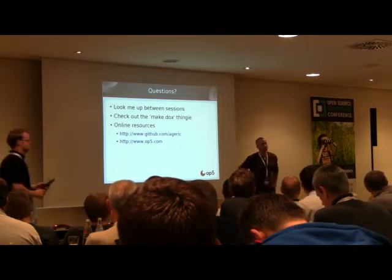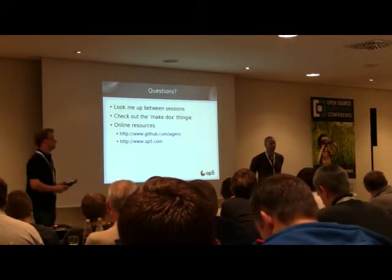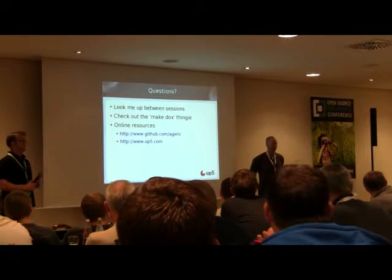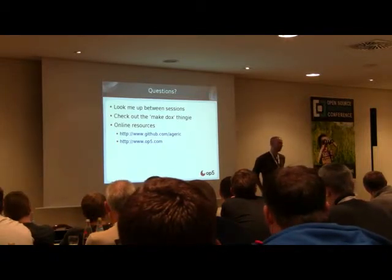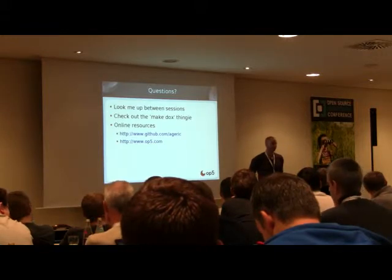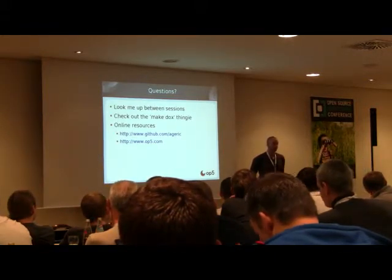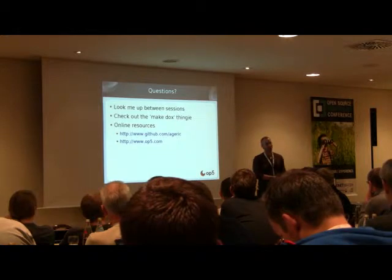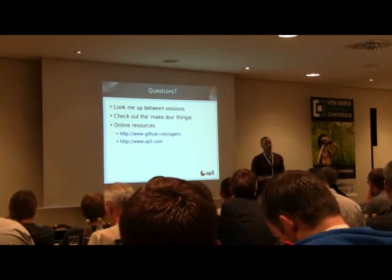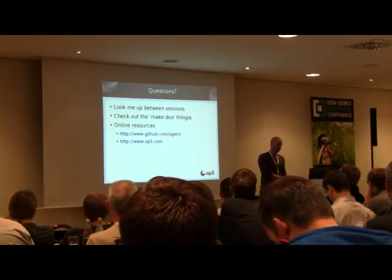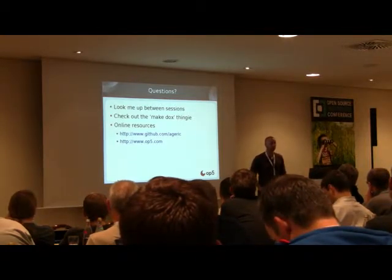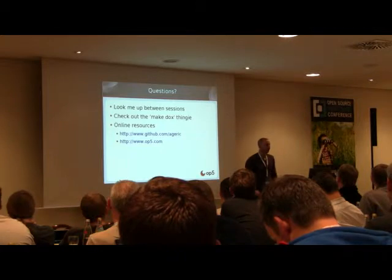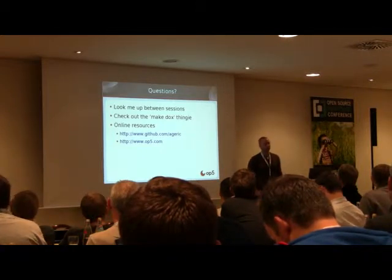Q: Is Nagios 4 still in beta status? A: Yes, it is. The current version is something like 3.99.96 — before it says 4.0, be a bit cautious. At OP5 we're supposed to build a beta for external testing with Monitor 6, which will contain Nagios 4, due out next Friday. We have about eight people running tests in our lab right now, so the versioning just hasn't been updated.